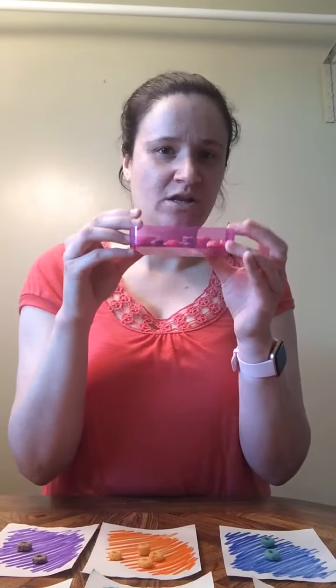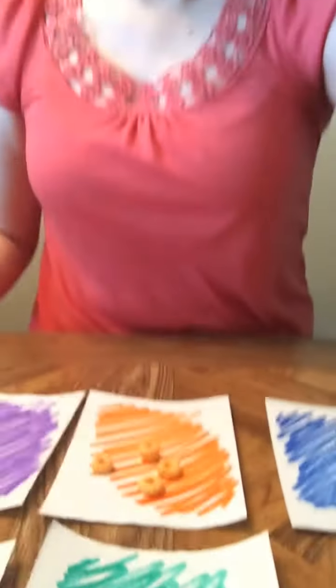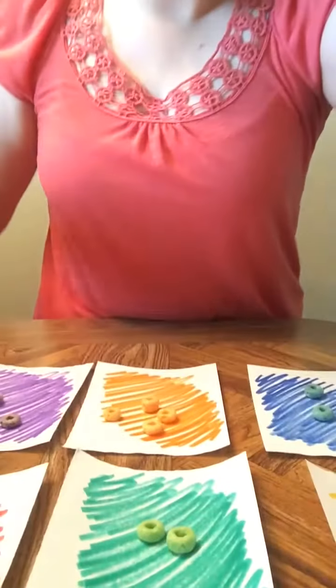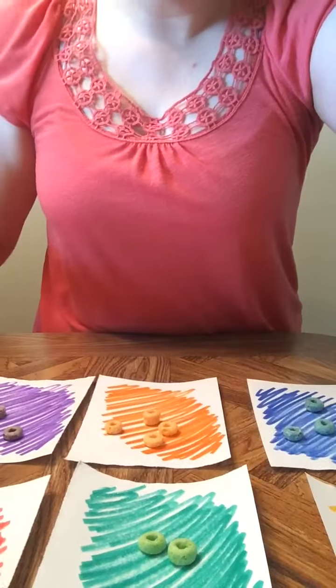So what we're going to do is I put some fruit loops in a little container and we're going to sort them to the correct color square.